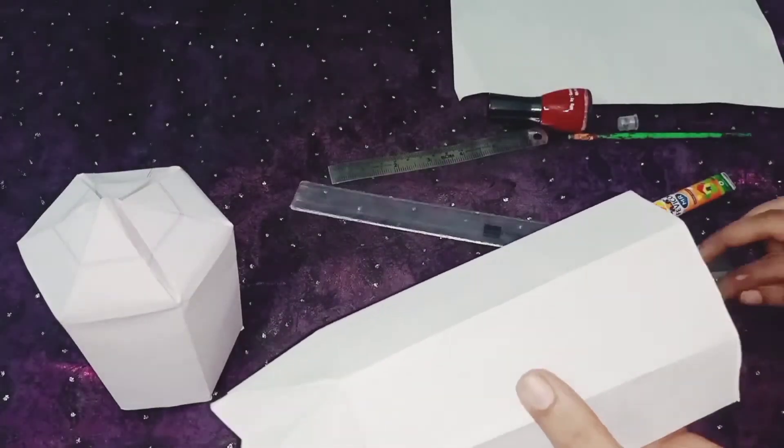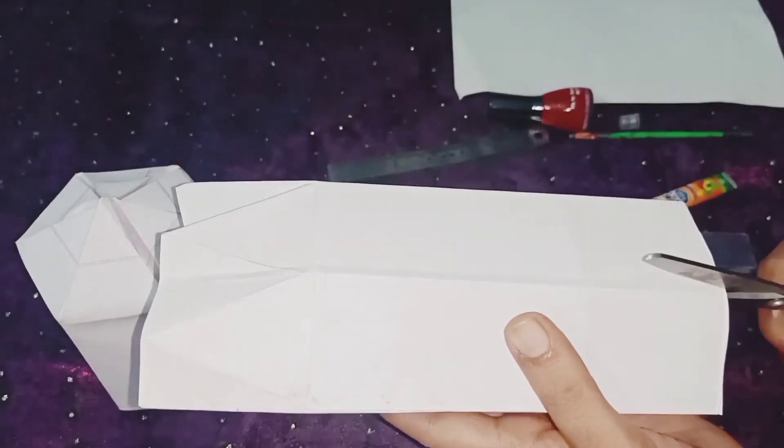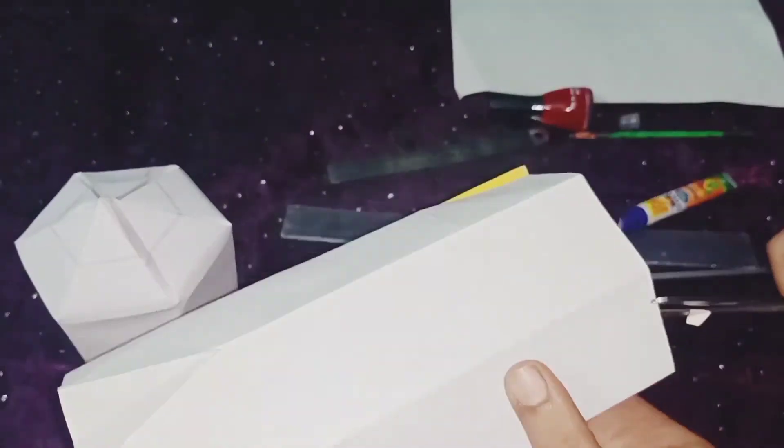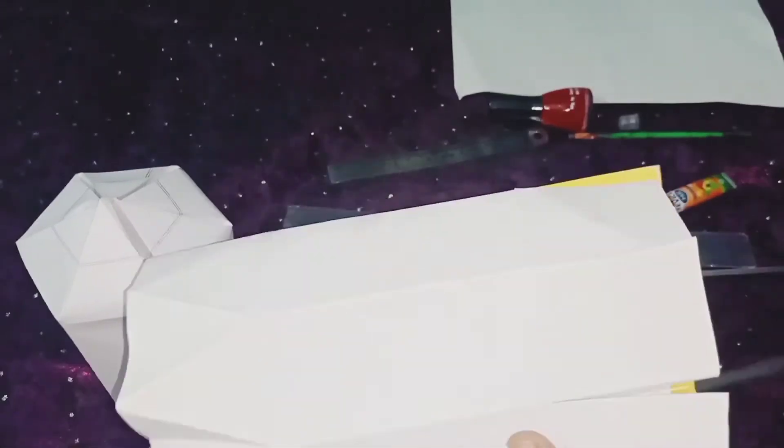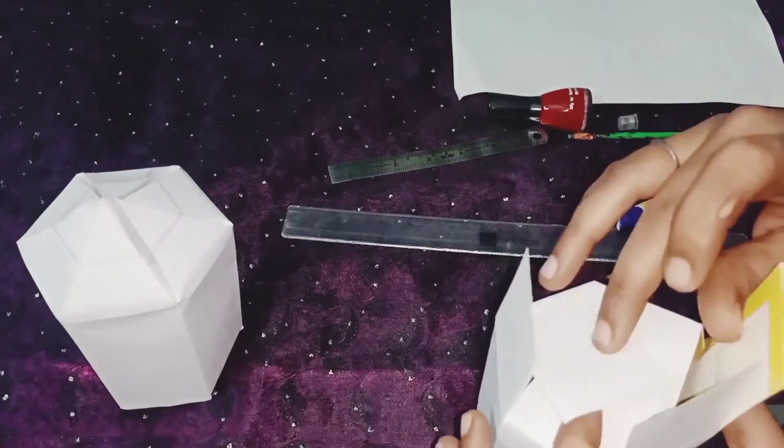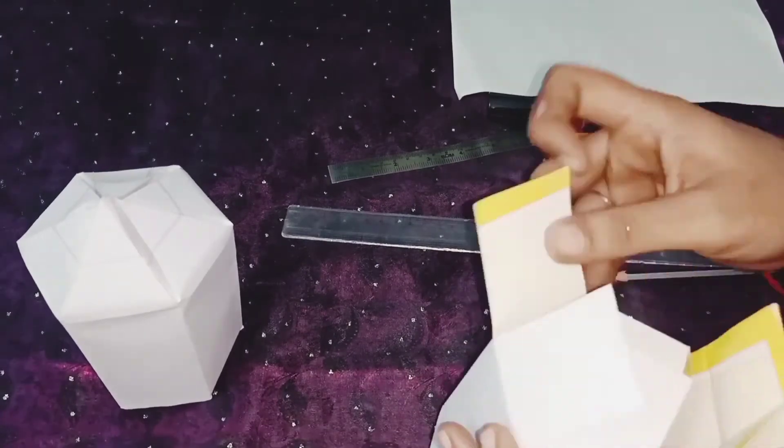Now I cut the bottom portion children, only cut, don't remove it. Cutting work is over children, now inside the bottom portion, box almost ready.